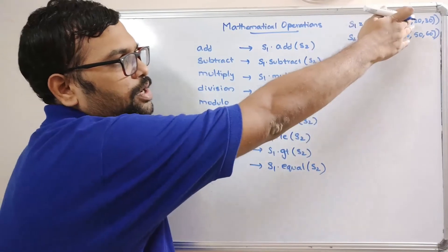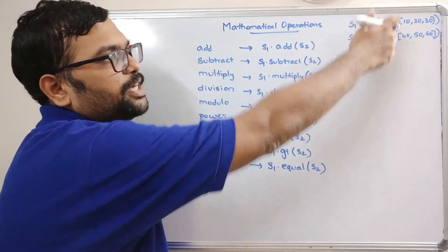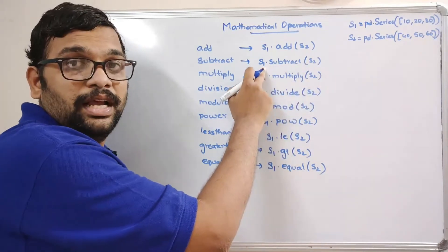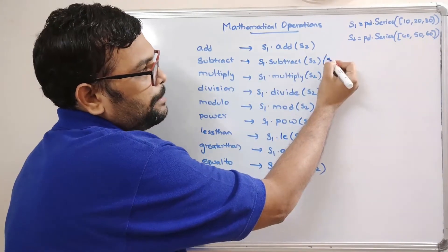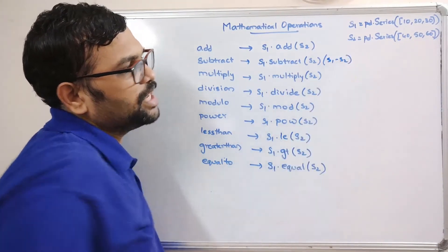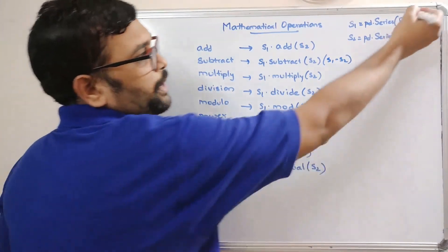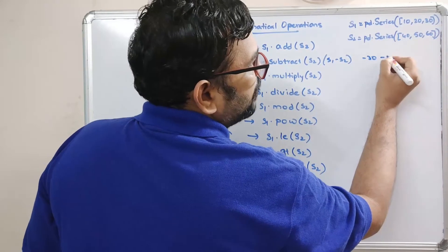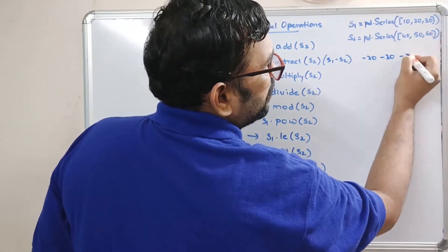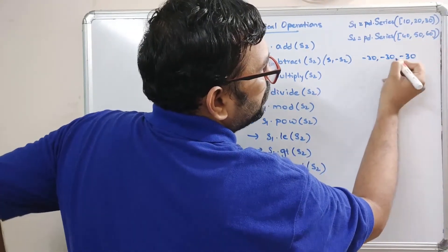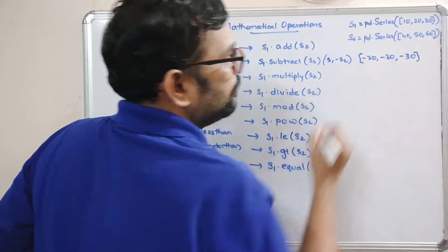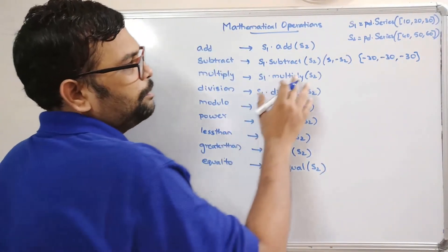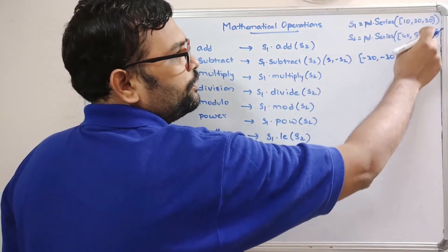For subtraction, a new Series will be created by subtracting s2 from s1 — so s1 minus s2. For example: 10 minus 40 is minus 30, 20 minus 50 is minus 30, 30 minus 60 is minus 30. We may also get negative results — that's no problem. For multiplication, the result will be positive.